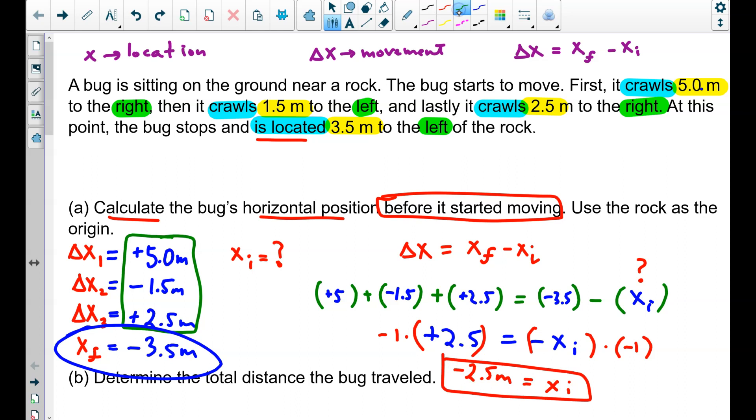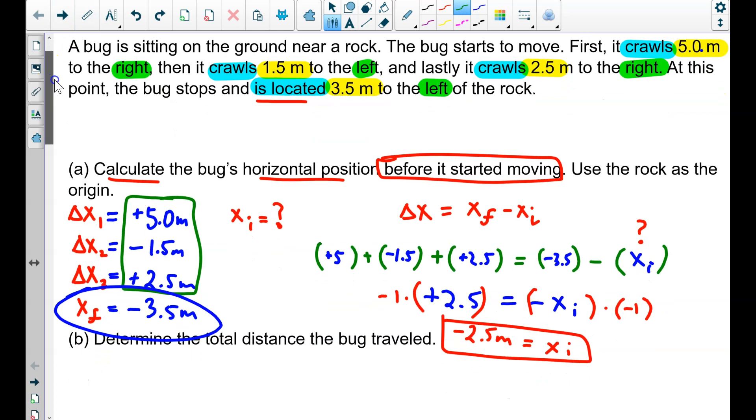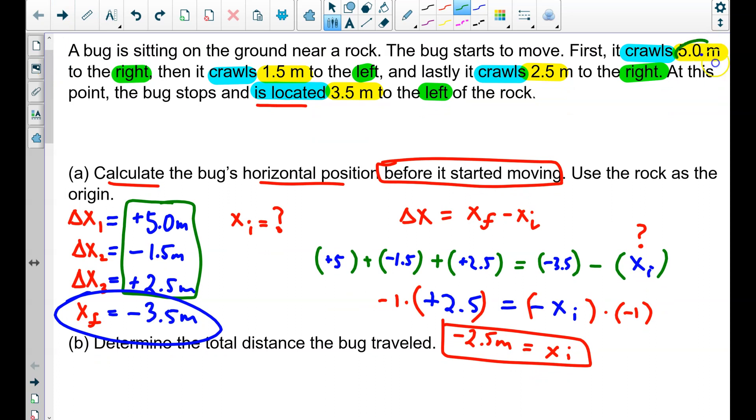The final thing we want to check is sig figs. Each given had two sig figs. Two sig figs here, two sig figs here, here, and here. So, make sure your final answer has two sig figs, and yes, it does.